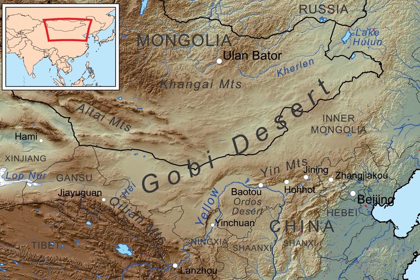The Gobi measures over 1,600 km from southwest to northeast and 800 km from north to south. The desert is widest in the west, along the line joining Lake Bossin and the Lop Nor, 87 to 89 degrees east. It occupies an arc of land 1,295,000 km² in area as of 2007, making it the fifth-largest desert in the world and Asia's second-largest.